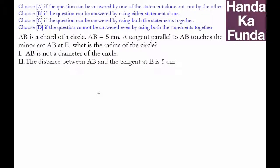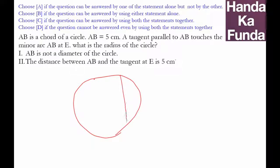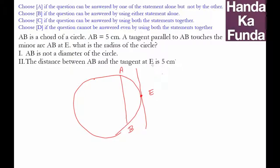This is a data sufficiency question. AB is a chord of a circle — here's my badly drawn circle with chord AB. A tangent parallel to AB touches the minor arc AB at point E. We need to find the radius of the circle, R.